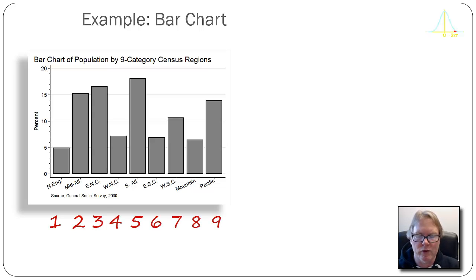That is to say the underlying numerical values are one through nine, and the attached labels are New England through the Pacific.